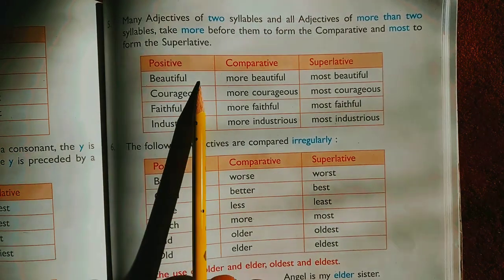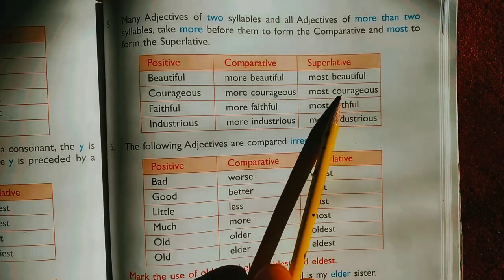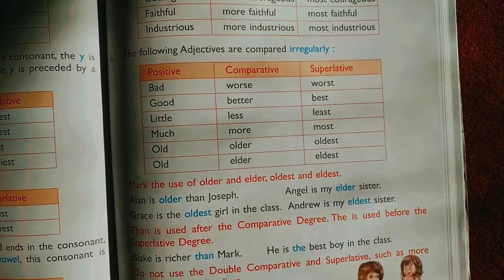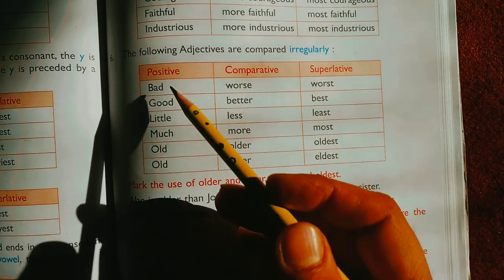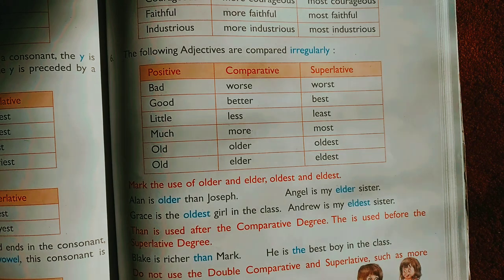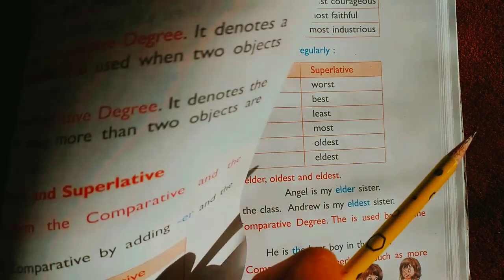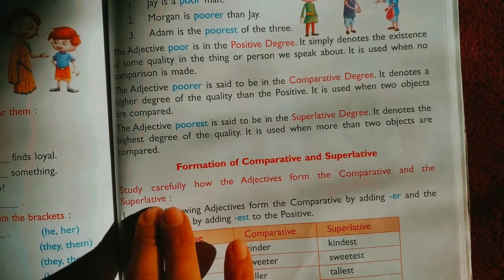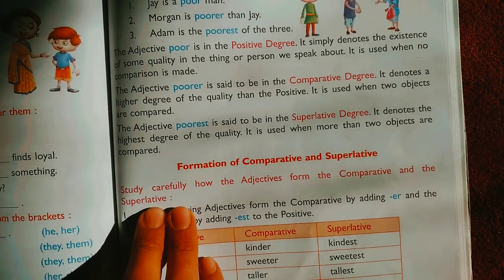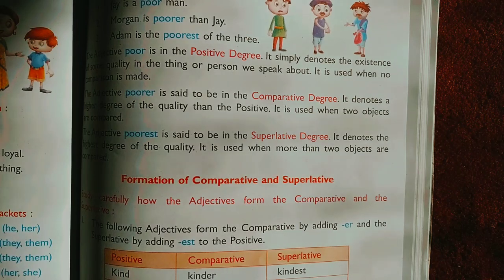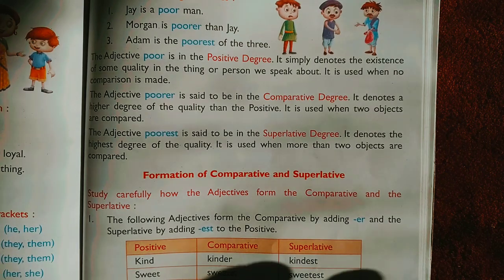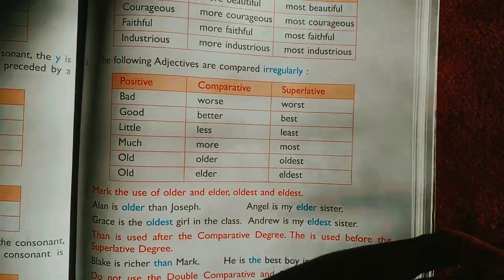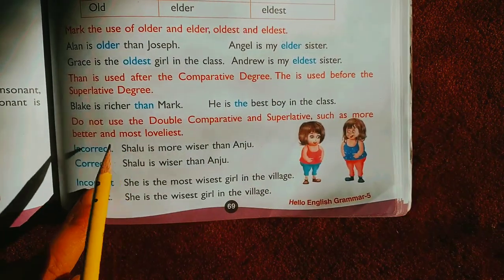In terms of adjectives, there are words that need to be added to convert them into comparative and superlative degrees. Some adjectives form their degrees irregularly — for example, 'bad, worse, worst' and 'good, better, best'. These are irregular forms. In comparative degree, two things or two persons are compared. In superlative degree, the highest degree of any quality is expressed. All of this was discussed in the previous video, along with the many rules.